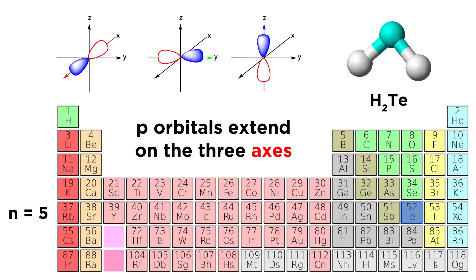Because P orbitals sit precisely on the three axes, they necessarily make ninety degree angles, and this explains the geometry of hydrogen telluride. Tellurium exhibits no hybridization whatsoever in forming this molecule.